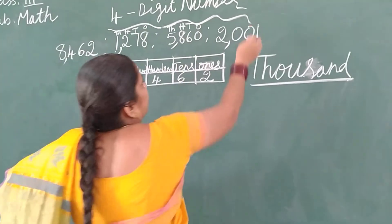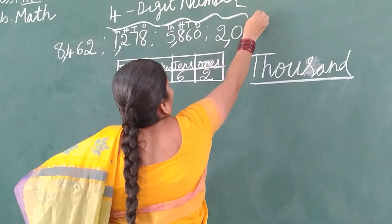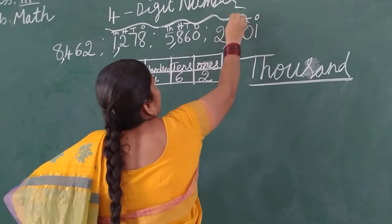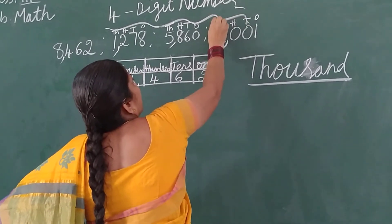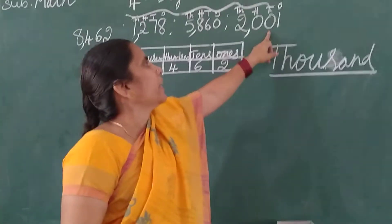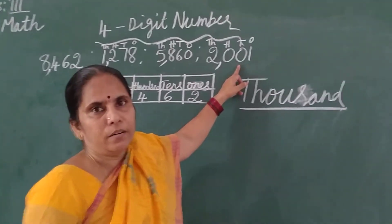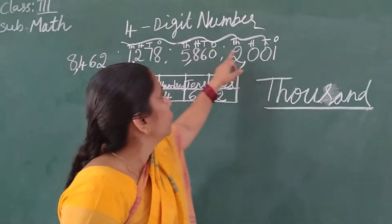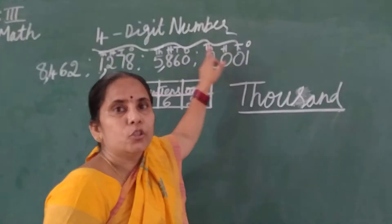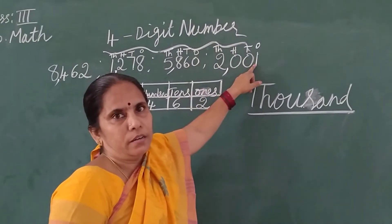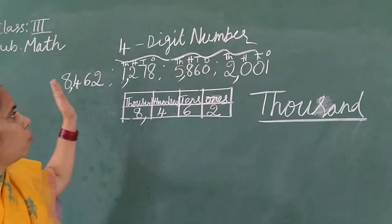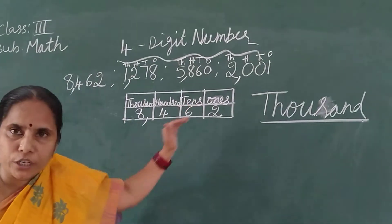Now the next number. What is the 1s place? 1s, 10s, 100s, and 1000s. Here, the 100s and 10s places have no number. So how will you read? 2,001. Like that you will read. Now you all understood how to read a 4-digit number?